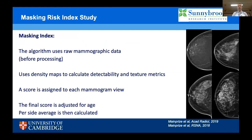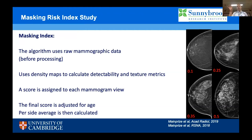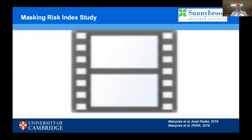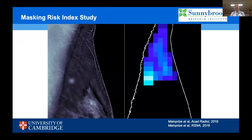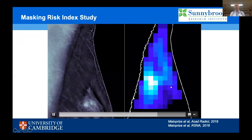What is the masking risk index? As James detailed, it's developed at the Sunnybrook Research Institute and uses raw mammographic data to create density maps, calculating detectability and texture metrics. It assigns a per-view score — as seen from these four right-sided CC mammograms, ranging from 0.1 for lower masking up to 0.5 for higher masking. Following acquisition of that per-view score, we adjust for age and then calculate a per-side score by taking the CC and MLO views and combining them to calculate the average. A beautiful animation by Dr. James Mayne-Price demonstrates the creation of these density maps, where brighter areas indicate lower masking and darker areas indicate higher masking.